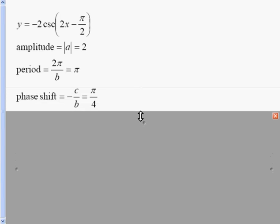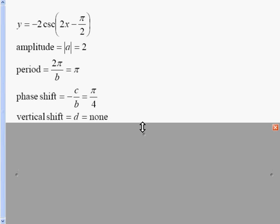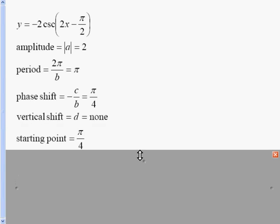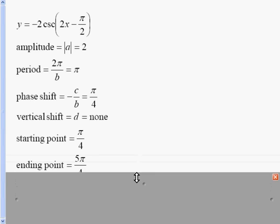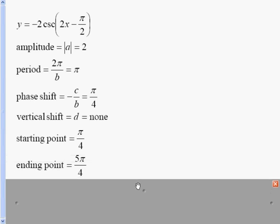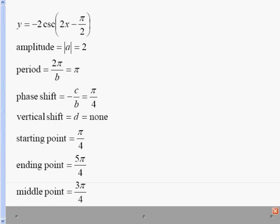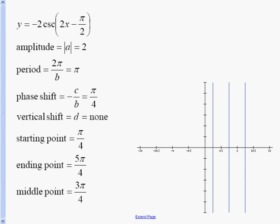Our phase shift is negative c over b, so the opposite of the inside value π over 2, divided by 2, gives us π over 4. There is no vertical shift. I find a starting, middle, and ending point: the starting point is always the phase shift. I add the period to get an ending point of 5π over 4, then take those two numbers and divide by 2 to get the middle point. At these three points we're going to have vertical asymptotes.